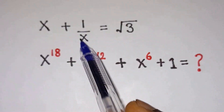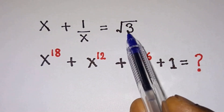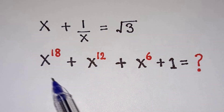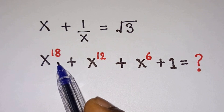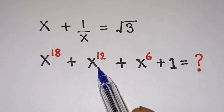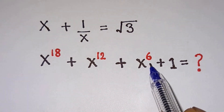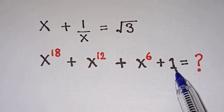Given x plus 1 over x is equal to root 3, what is the value of x to the power 18 plus x to the power 12 plus x to the power 6 plus 1?